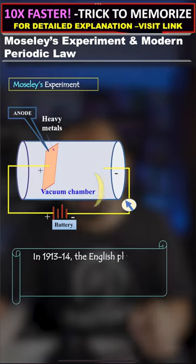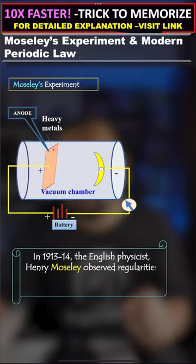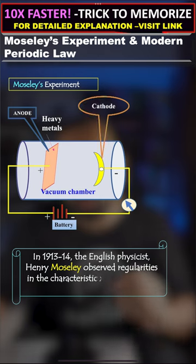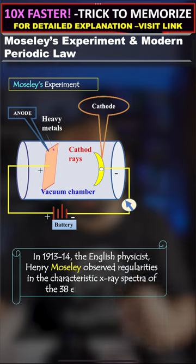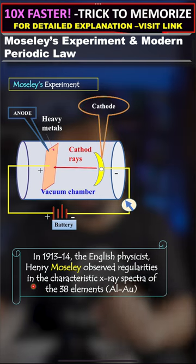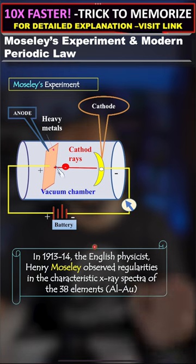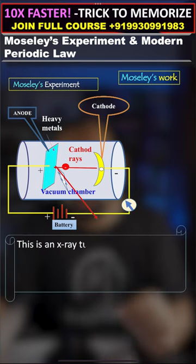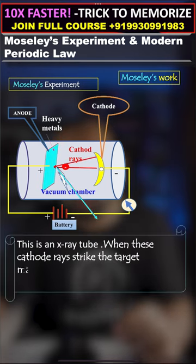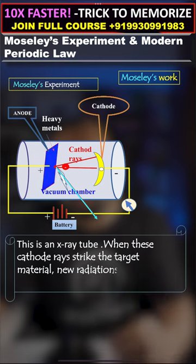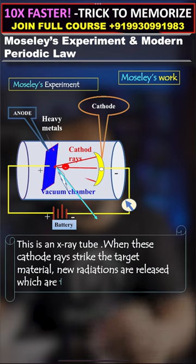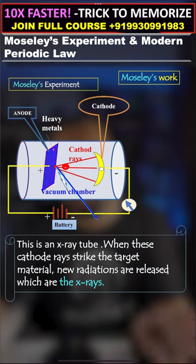In 1913 to 1914, the English physicist Henry Moseley observed regularities in the characteristic x-ray spectra of 38 elements, aluminium to gold. This is an x-ray tube — when these cathode rays strike the target material, new radiations are released which are the x-rays.